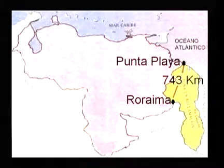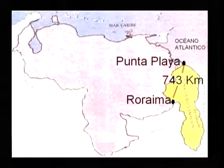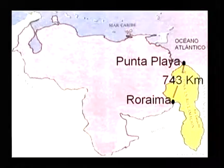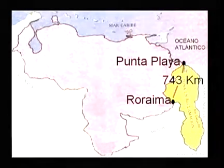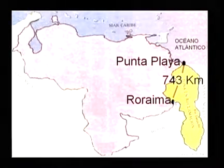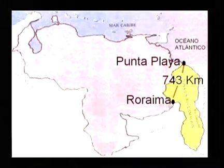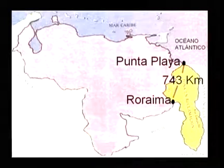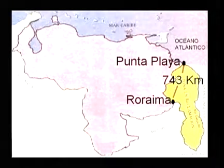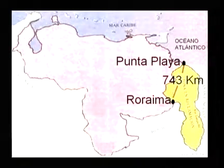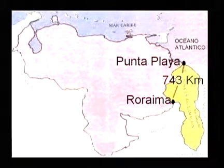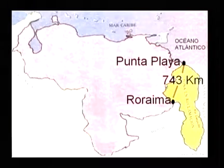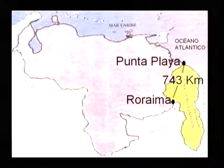Compartimos límites marítimos y fronterizos. Tomamos como punto de referencia Punta de Playa hasta el Cerro Roraima, donde limitamos con la República de Guyana. Allí vamos a tener una longitud o perímetro de 743 kilómetros. Debes ir haciendo las anotaciones correspondientes de los puntos extremos señalados y los perímetros, tanto al norte, al este con el océano Atlántico, como ahora con la República de Guyana.